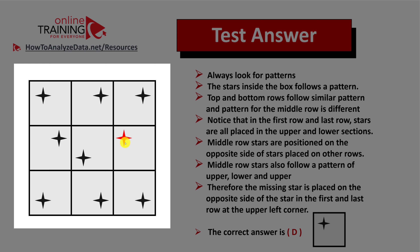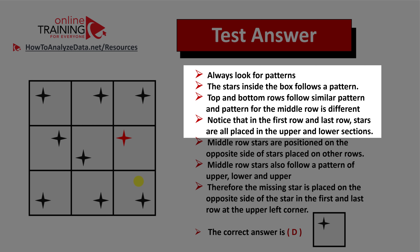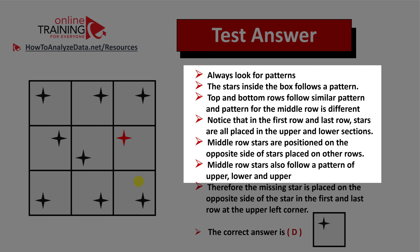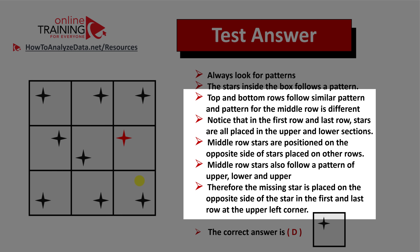In the first column, the middle-row star is in the upper right corner, versus the top and bottom rows which are placed on the left side. The same pattern applies in the middle column and will apply in the right column as well. The missing star is placed on the opposite side of the stars in the top and bottom rows. Top and bottom rows have stars in the upper left sections, so the missing star follows the middle-row pattern of upper, lower, then upper — at the opposite side. The correct answer is Choice D.